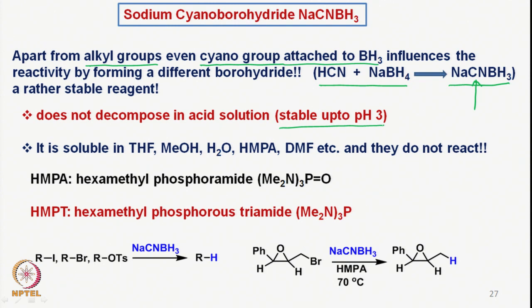Sodium cyanoborohydride is also soluble in THF, methanol, water, HMPA (hexamethylphosphoramide), and DMF (dimethylformamide), and it does not react with these solvents. For comparison, HMPA is a phosphoramide used as a solvent, while the phosphorous triamide form is used as a phosphine analogous to triphenylphosphine or trialkylphosphine.